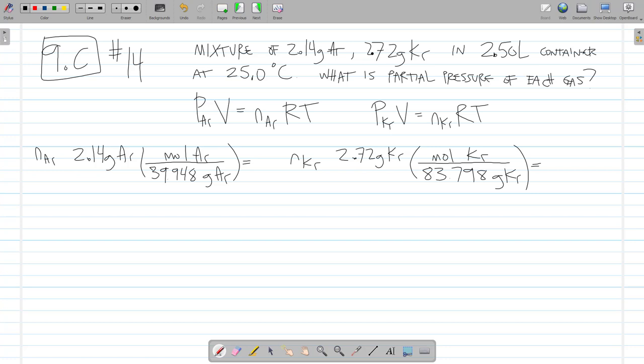So, let's plug these into the calculator. 2.14 divided by 39.948 equals 0.0535 moles, the moles of argon. And then, 2.72 divided by 83.798 equals 0.0325 moles of krypton.